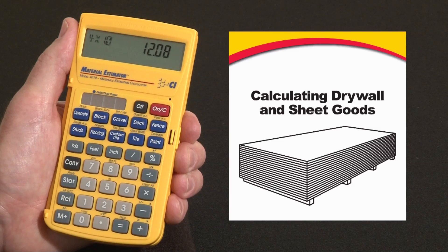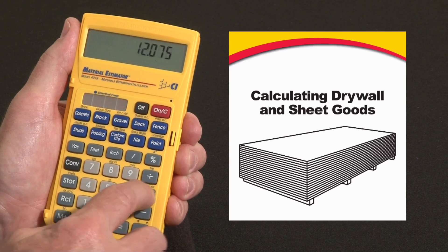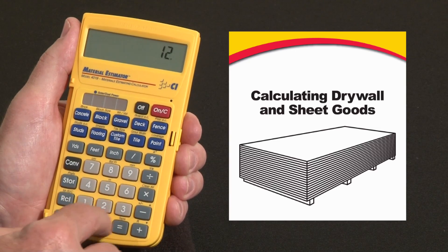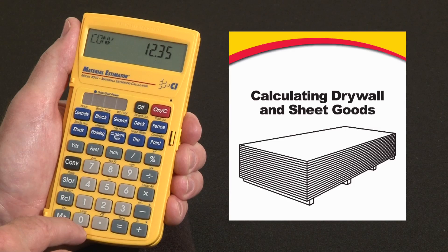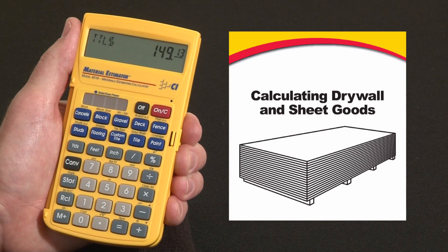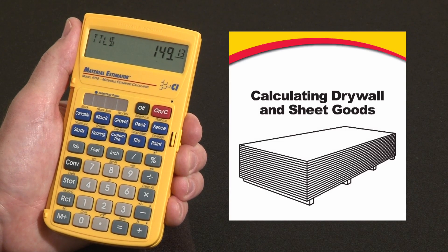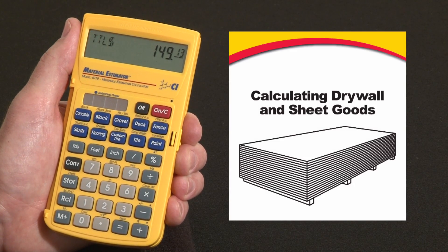Say that goes for $12.35 a sheet — I can just say times 12.35, convert, and over the zero it says cost. So you've got roughly $149 worth of sheetrock to cover those three walls.